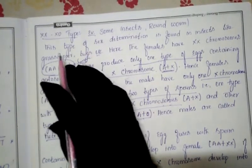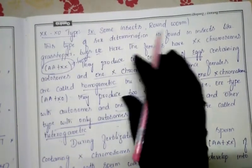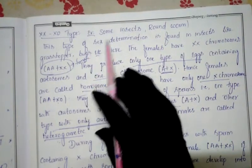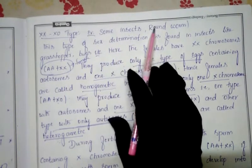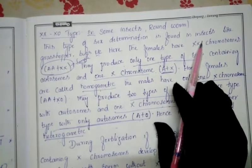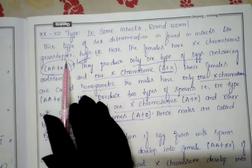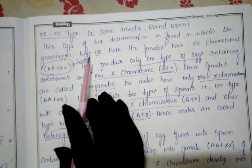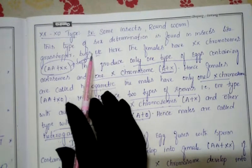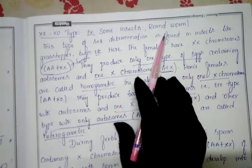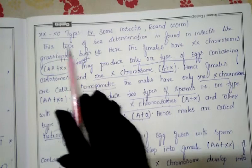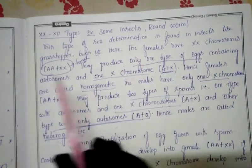The XX-X0 type of sex determination is found in some insects and roundworms. Insects such as grasshoppers and bugs, and roundworms (Aschelminthes) show this type. In these organisms, females have the XX chromosome complement.